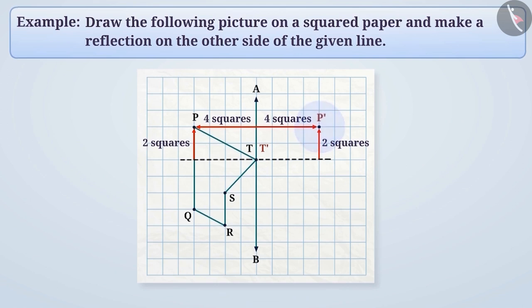Q is 5 squares down from P, so we will mark Q prime 5 squares below P prime.